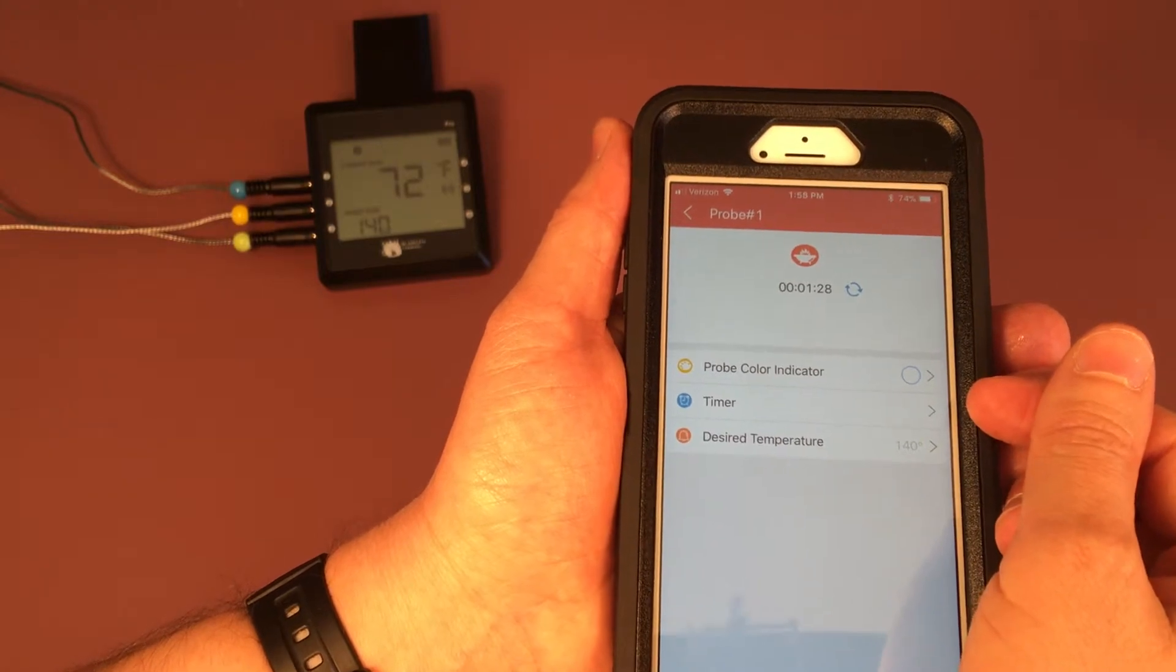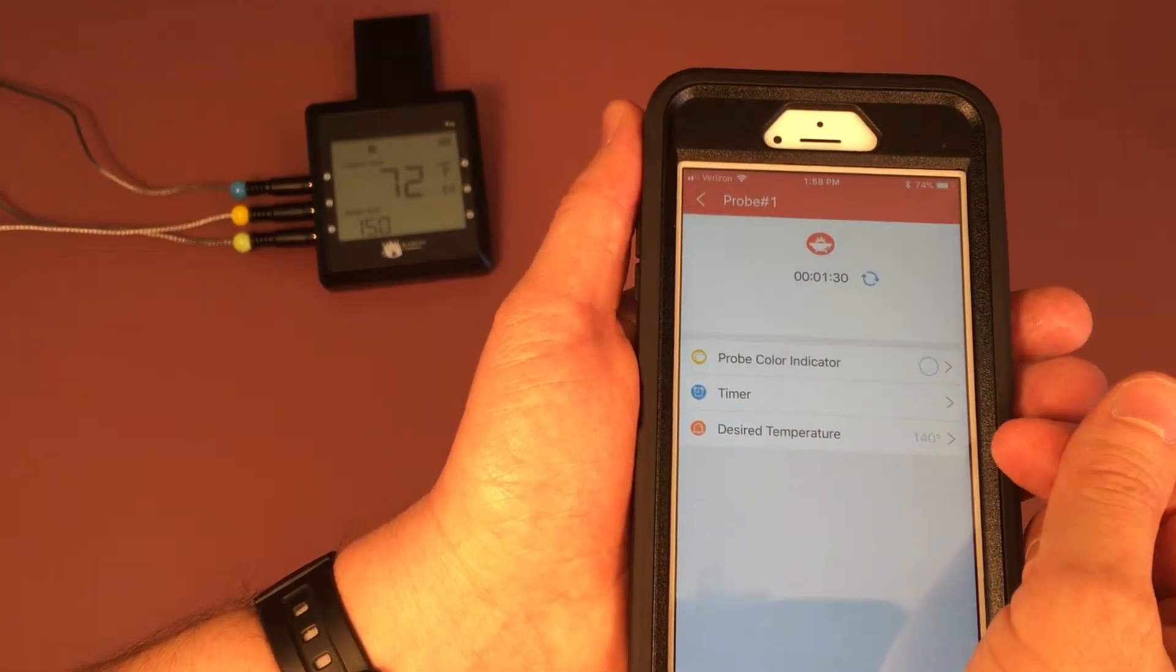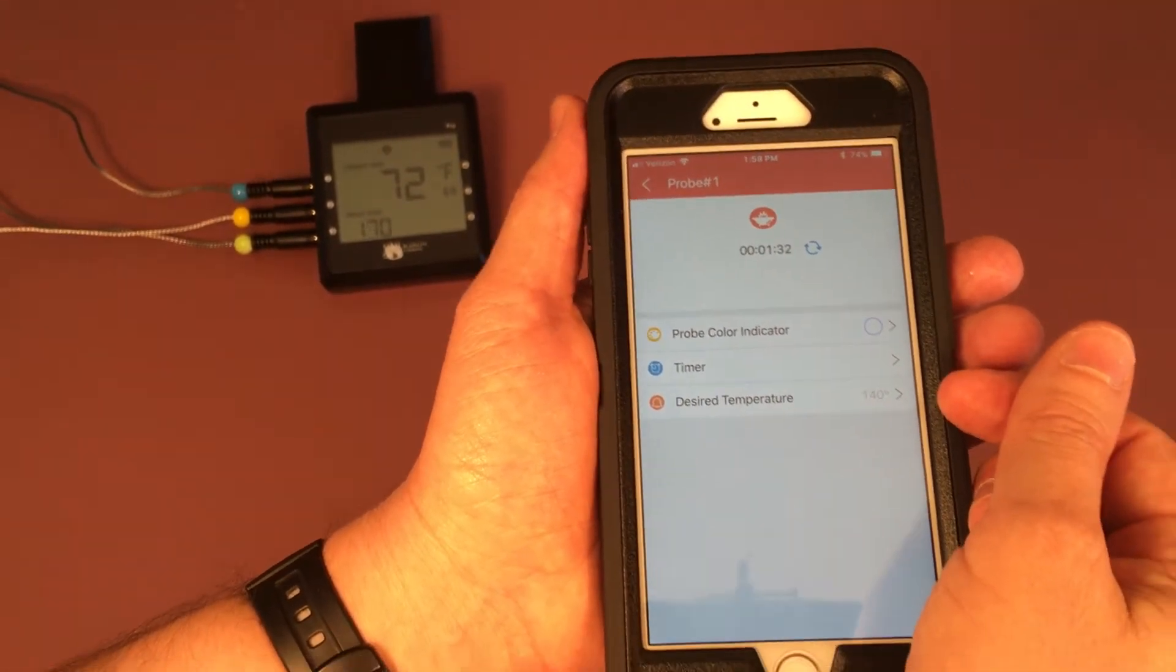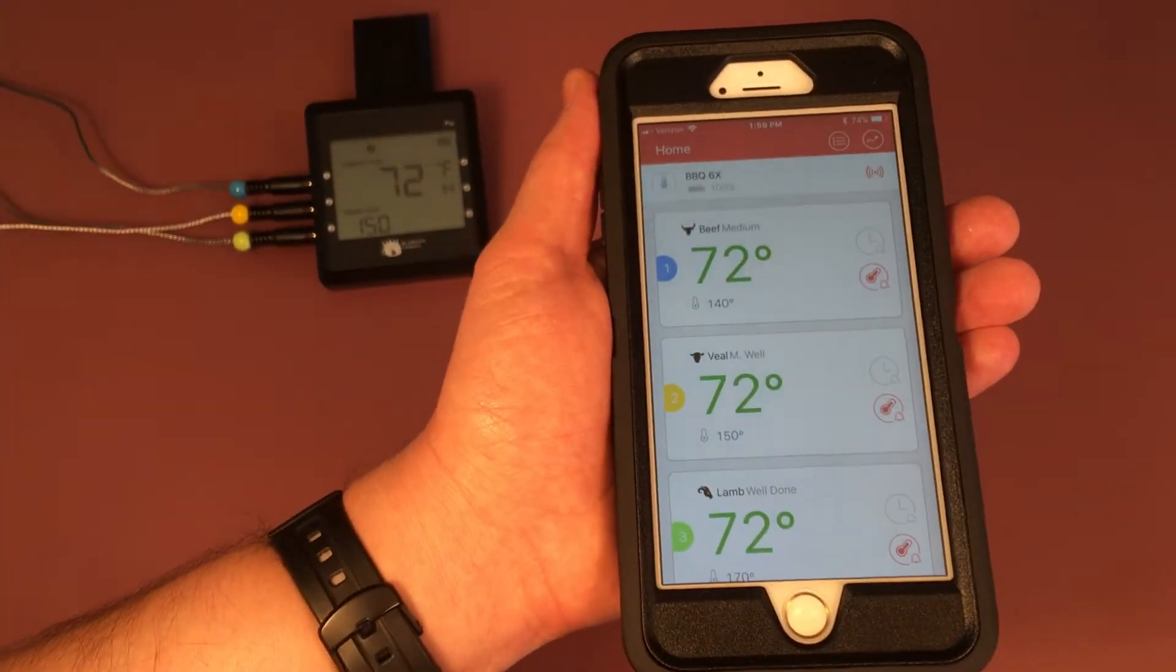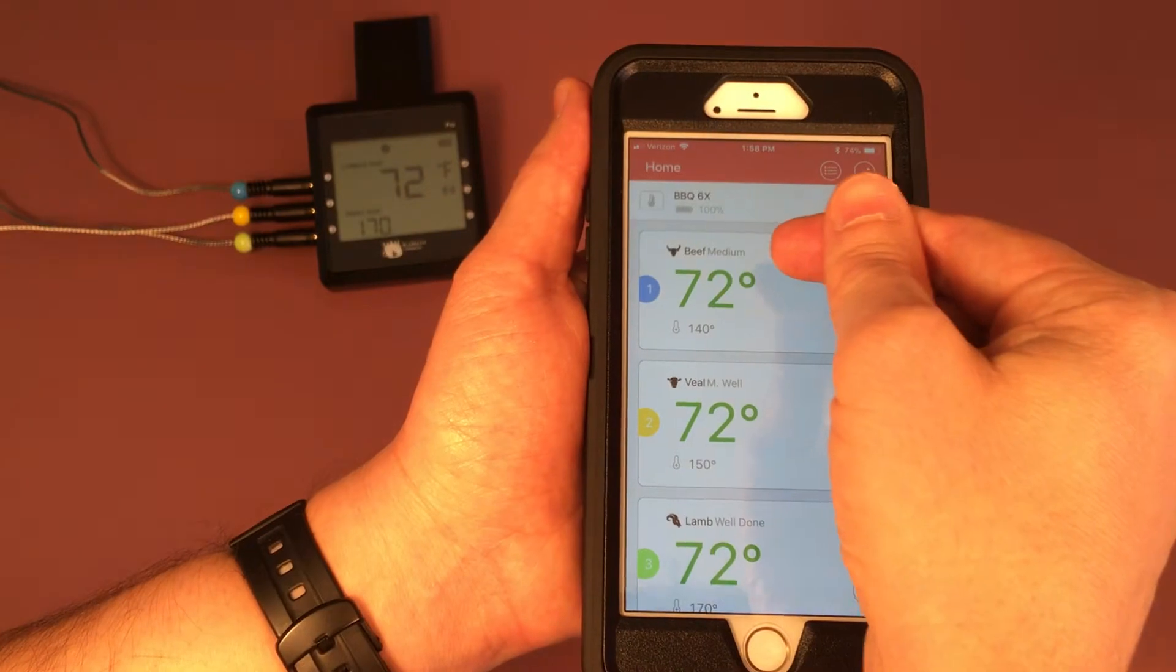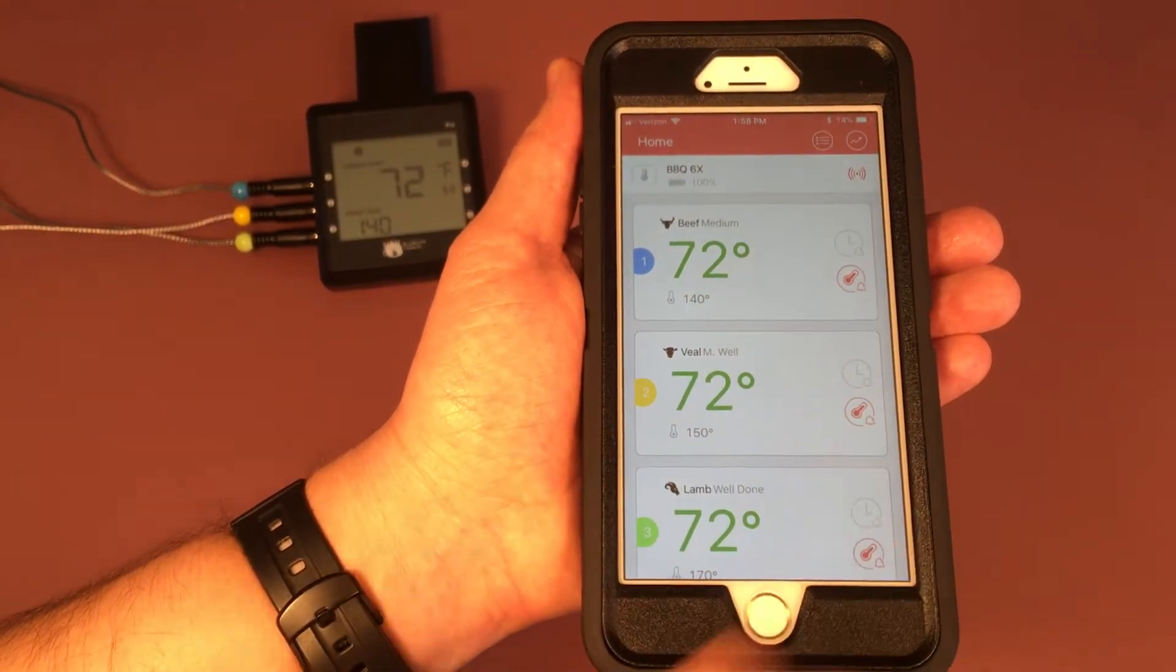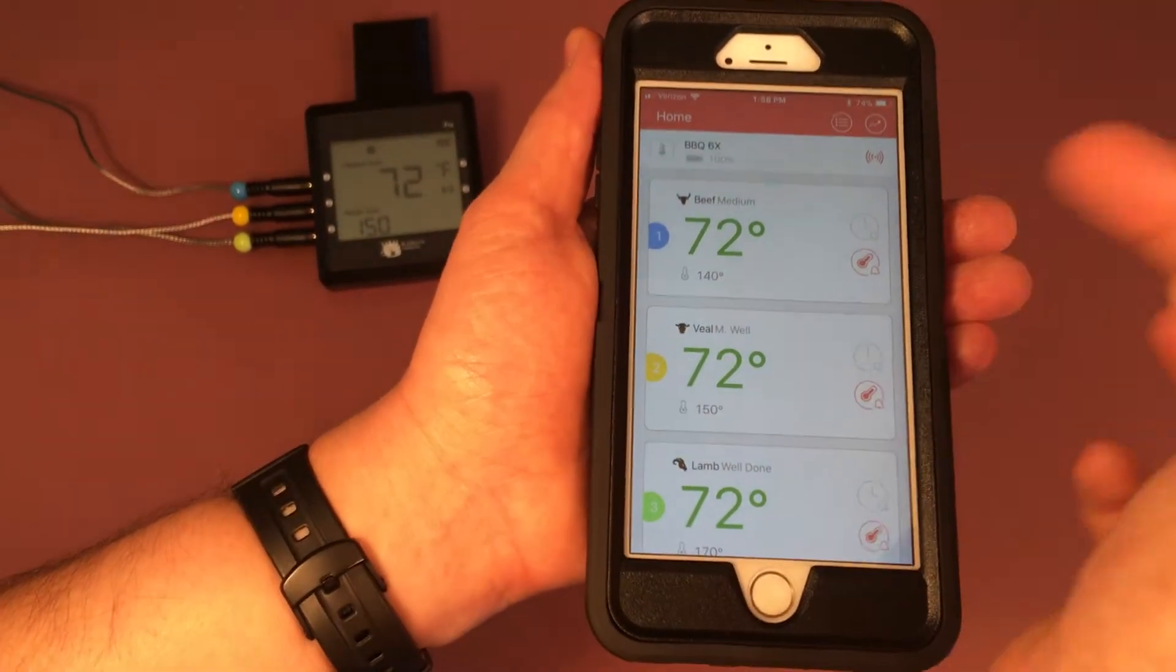So here you can see you have the names of your preset temperatures and then you have the desired temperatures for each one.